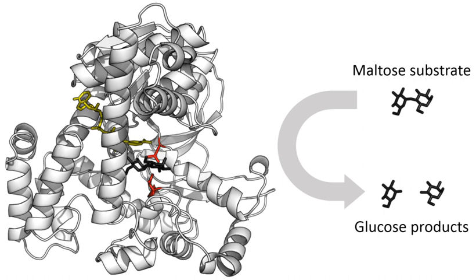Enzymes differ from most other catalysts by being much more specific. Enzyme activity can be affected by other molecules. Inhibitors are molecules that decrease enzyme activity, and activators are molecules that increase activity. Many therapeutic drugs and poisons are enzyme inhibitors. An enzyme's activity decreases markedly outside its optimal temperature and pH, and many enzymes are permanently denatured when exposed to excessive heat, losing their structure and catalytic properties.